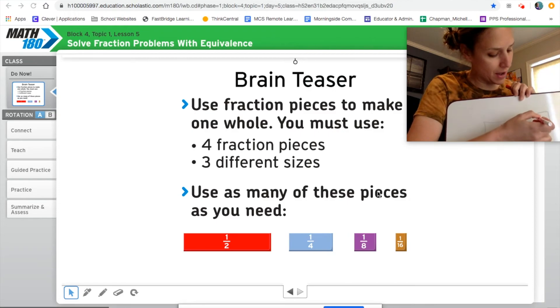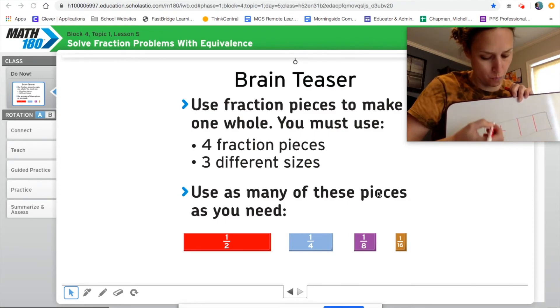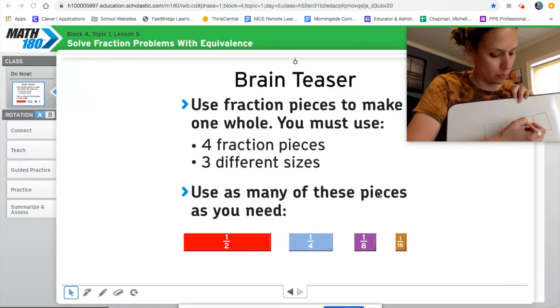You could then cut that half in half again. These are each one fourth. Because one fourth, one fourth. If I cut this one in half, I could make four. So this would be one fourth.